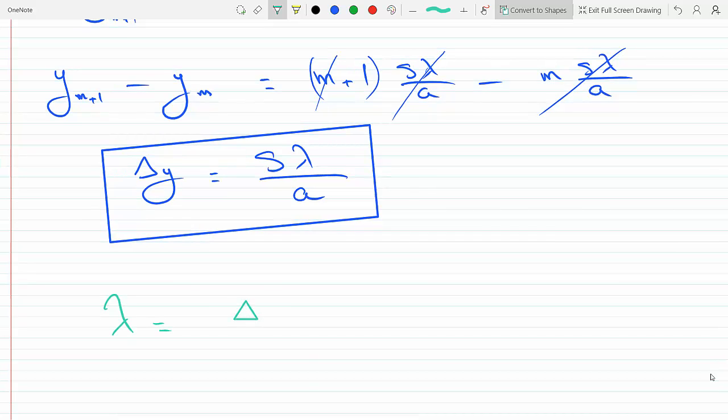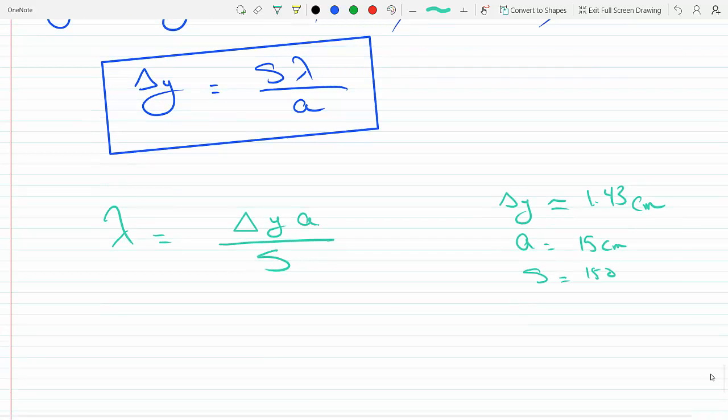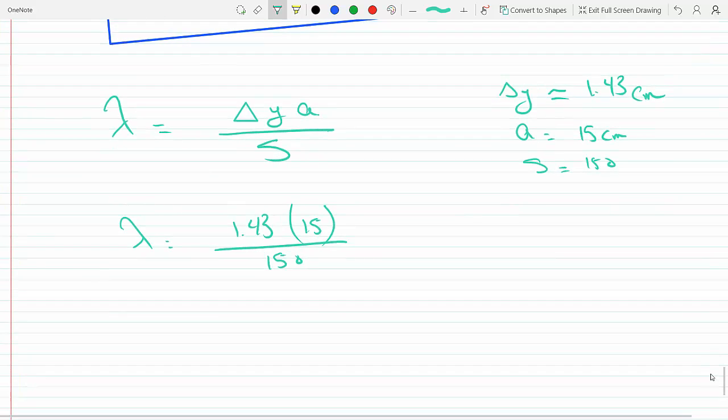So I will get lambda to equal delta y times a over s. Now we know from the graph that the fringe width is about 1.43 centimeters. We know that the two slits are separated by 15 centimeters, so that's a, and the distance between the speakers and the microphone, that's our s, is 150 cm. Plugging this in, we will get 1.43 times 15 divided by 150.